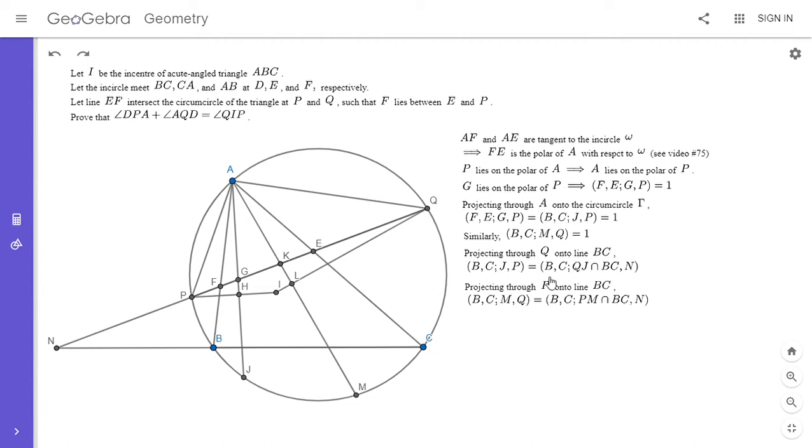And then I'm going to do the same thing with this other cross ratio, but I'm going to project through point P instead. So if I start with (B, C, M, Q) and I project through point P onto the line BC, B and C stay where they are. If I connect P to point M, it intersects BC at PM intersect BC. And if I connect P to point Q, it intersects line BC at point N. And the reason I did that is because now we can compare these two. They both have to be equal to one. But BC and N are the same in these two cross ratios. So that means the third point, which is QJ intersect BC has to be the same as PM intersect BC. That's the only way they could both equal one.